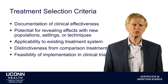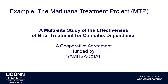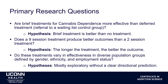Here's an example of a project done to evaluate the effectiveness of brief treatment for cannabis dependence — the Marijuana Treatment Project (MTP). It was a multi-site study conducted in three different cities in the United States, recruiting 450 chronic marijuana users from the community. The main research question number one was: are brief treatments for cannabis dependence more effective than deferred treatment? This is an effectiveness question comparing no treatment with treatment, and the hypothesis, obviously, is that brief treatment is better than no treatment.